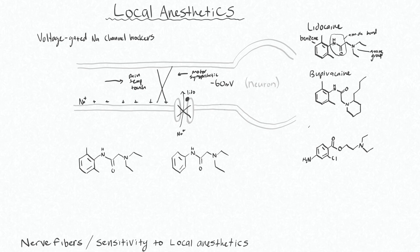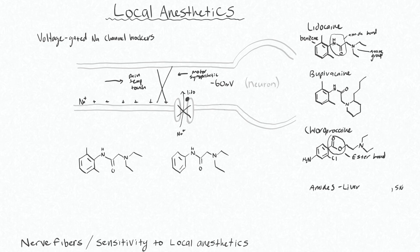Just to show you an ester local anesthetic — this is chloroprocaine, and it has an ester bond here, which means that its metabolism will be different than those with the amide bond. The amides are metabolized by the liver, and generally that's a little bit slower. Whereas the esters are broken down by plasma esterases — specifically pseudocholinesterase, which may be a familiar name to you. This tends to be a little bit faster for metabolism, because as soon as the local anesthetic is in your bloodstream, it's surrounded by these esterases, which will break it down.